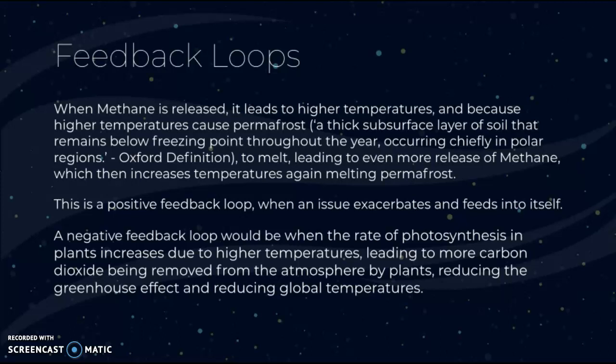An example of a negative feedback loop is when the rate of photosynthesis in plants increases due to higher temperatures, leading to more carbon dioxide being removed from the atmosphere. This reduces the greenhouse effect, cools the Earth, and reduces global temperatures. So the initial warming is counteracted: more photosynthesis means more CO₂ absorbed, which removes greenhouse gases and cools the Earth — the opposite effect of a positive feedback loop, which feeds into itself.